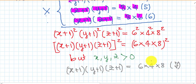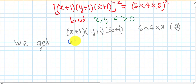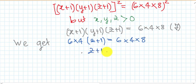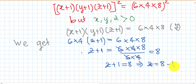We get x plus 1 times y plus 1 times z plus 1 equals 6 times 4 times 8. Now we substitute: since x plus 1 times y plus 1 equals 6 times 4, we replace it. So 6 times 4 times z plus 1 equals 6 times 4 times 8, and z plus 1 equals 8. Therefore z equals 8 minus 1 equals 7.